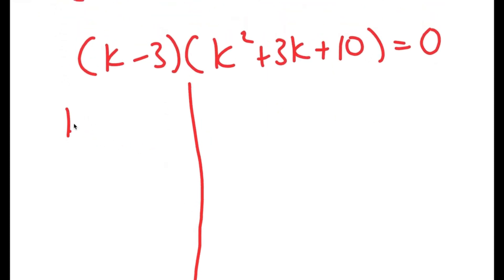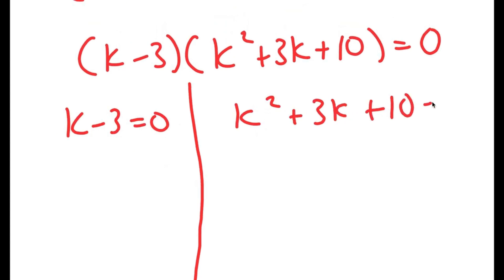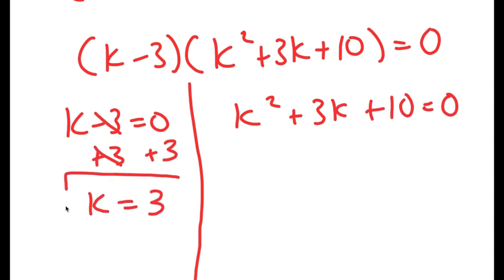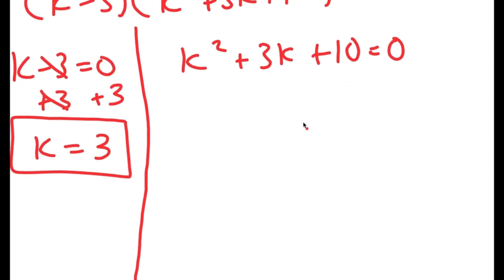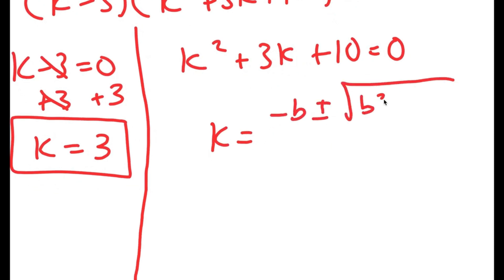Now I'm going to split this into two equations. I have k minus 3 equals 0 and k squared plus 3k plus 10 is equal to 0. For k minus 3 equals 0, I can add 3 on both sides, so I get k is equal to 3. This is one solution of k. For k squared plus 3k plus 10 equals 0, because this is a quadratic equation, I can use the quadratic formula, which is negative b plus or minus the square root of b squared minus 4ac all over 2a.